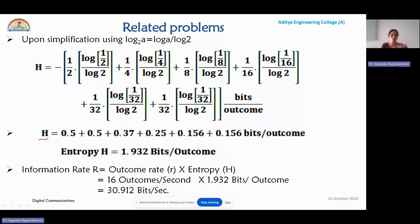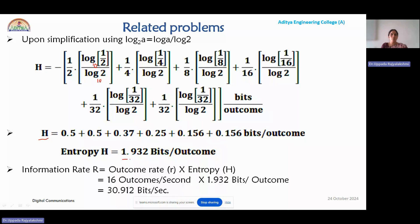The base is 10 for both numerator and denominator, so you can directly use a calculator to solve this. H is obtained as 1.392 bits per outcome. To calculate the information rate, multiply the outcome rate with entropy: 16 outcomes per second multiplied by 1.392 bits per outcome gives 30.912 bits per second.